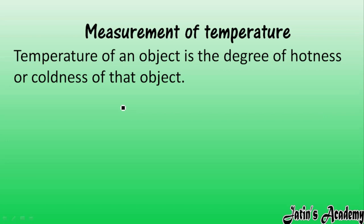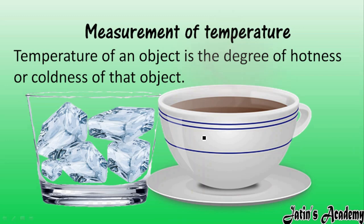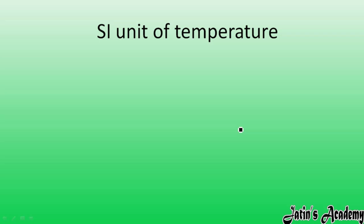Temperature of an object is the degree of hotness or coldness of that object. Temperature tells us how hot or how cold an object is. To measure the temperature of any object, we use instruments — not our fingers.